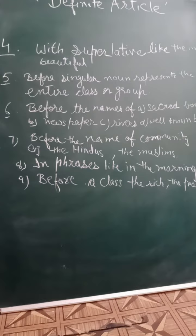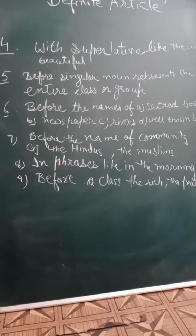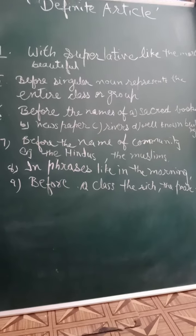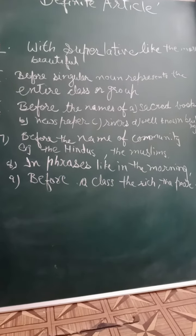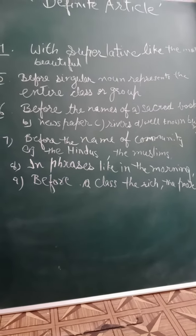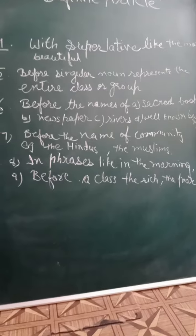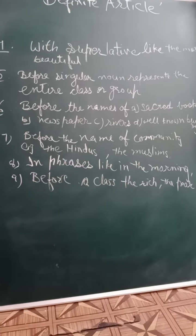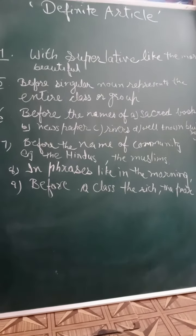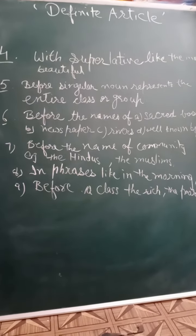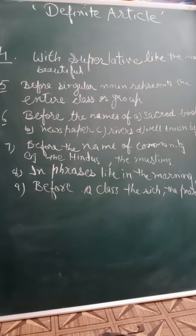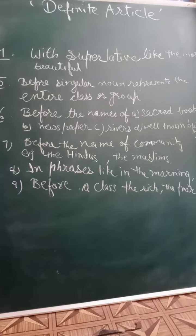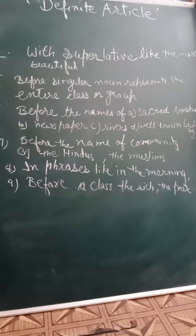Another case is when we use article 'the' before a singular noun which represents the entire class or group. For example, 'The dog is a faithful animal.' So before 'dog' we use 'the', because we are not talking about a particular dog — here 'dog' represents the entire group of dogs.